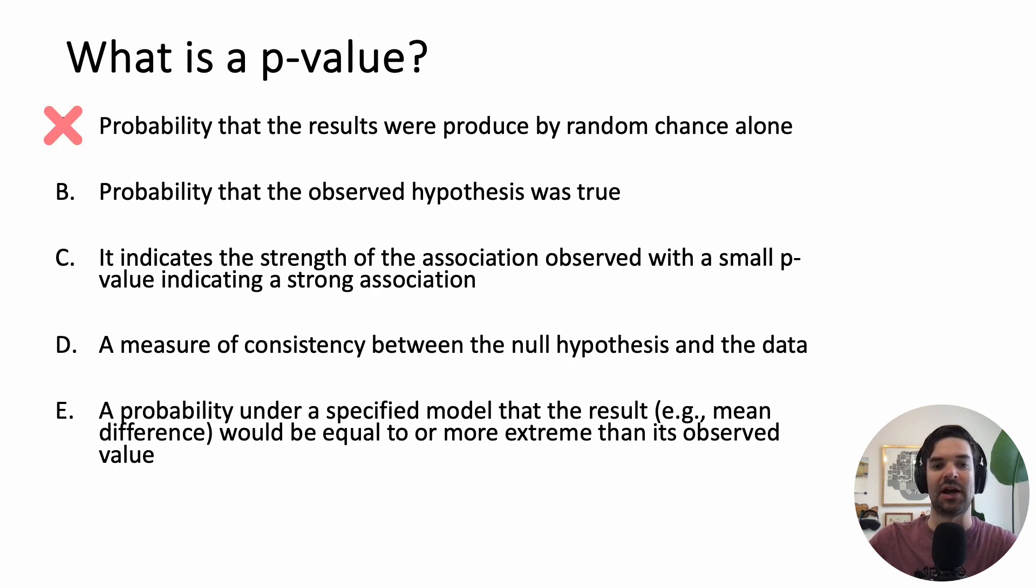The probability that the observed hypothesis was true. False. It indicates a strength of the association observed with a small p-value indicating a strong association. False.